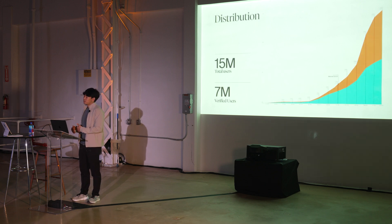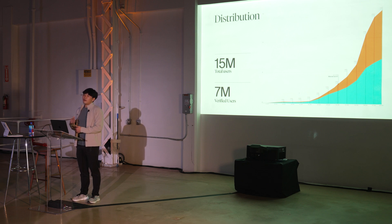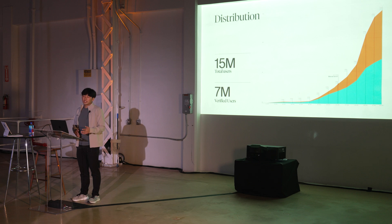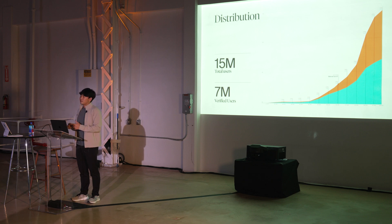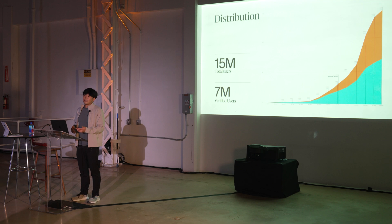Just to hammer home that point of distribution — you can see here how exponential the growth has been in the past year. That will continue to grow as we introduce new ways to verify and join the network, like the NFC credential that was just announced. We have 15 million users, 7 million of those verified, and these users come back to the app at about a high 90% frequency. The app's page is the main screen they're navigated to first. For developers, this is an unprecedented opportunity to find distribution — which for indie developers and small developers is oftentimes an Achilles heel.